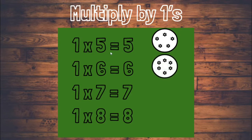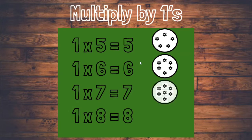One times six means one group with six flowers inside of the group. We know that one times six equals six. One times seven means one group of seven — one group with seven flowers gives us seven.